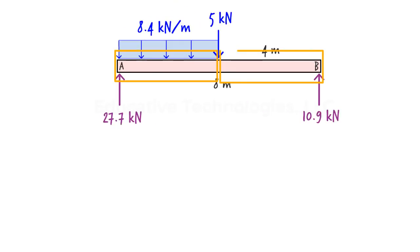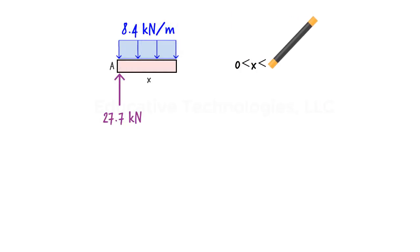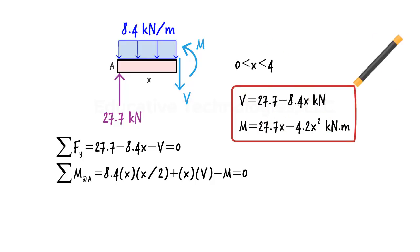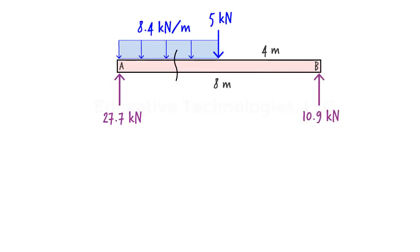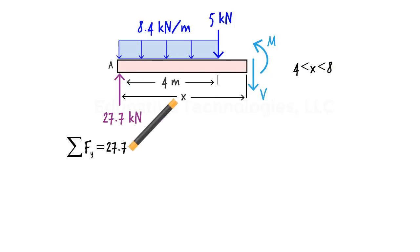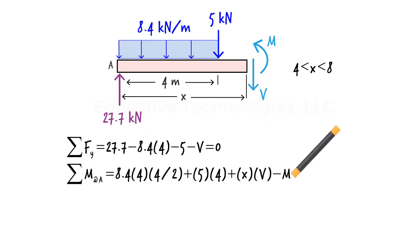The loads divide the beam into two segments, so we need two sets of shear and moment equations. For the left half, we cut at an arbitrary point where x is between 0 and 4. Writing and solving the equilibrium equations gives the shear and moment equations for the left half. For the right half, we cut at distance x from the origin where x is between 4 and 8, yielding the equilibrium equations and their resulting shear and moment equations.